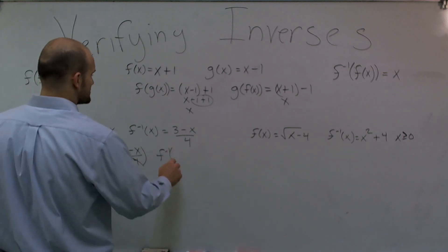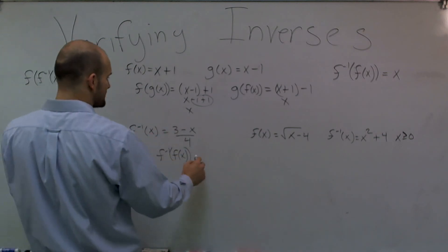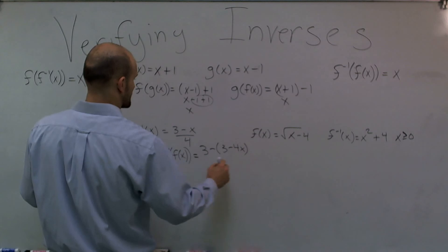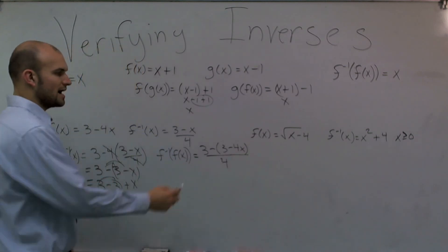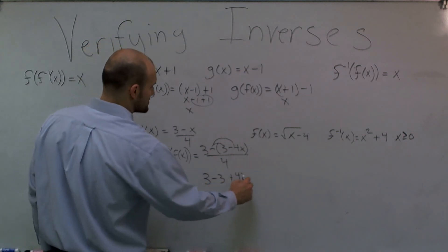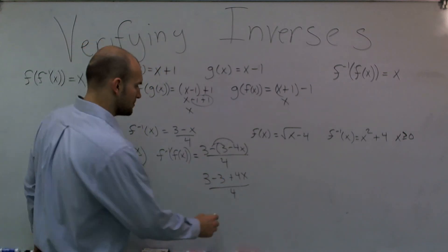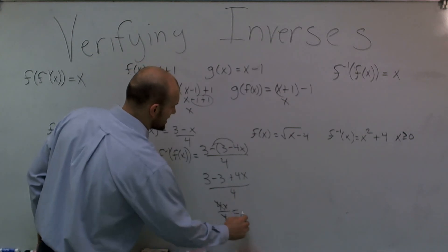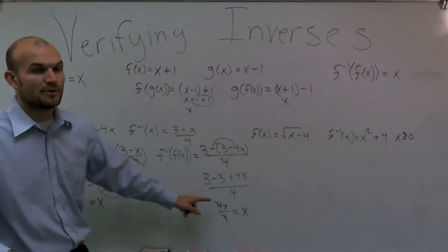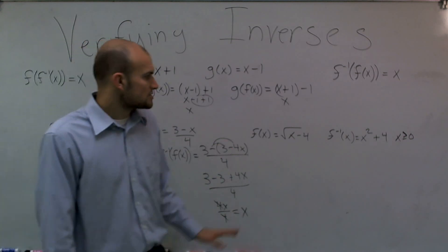Now let's check it the other way: f⁻¹(f(x)). I plug f(x) = 3 − 4x into f⁻¹(x), giving (3 − (3 − 4x))/4. Applying the distributive property of the negative: (3 − 3 + 4x)/4. Since 3 − 3 = 0, I'm left with 4x/4, which simplifies to x. Since both compositions give x, these are inverses.